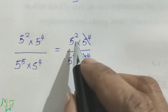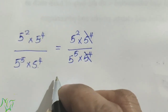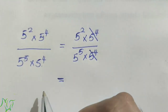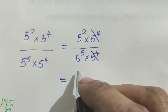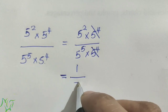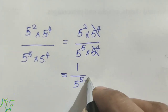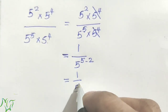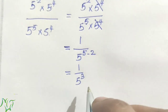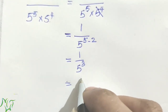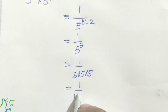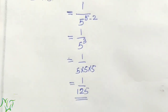5 squared by 5 raised to 5 — here we use the division rule. The power in the denominator is bigger, so we use the second rule: 1 by 5 raised to 5 minus 2, which is 1 by 5 raised to 3. To find the value, we expand: 1 by 5 into 5 into 5, multiplied 3 times, equals 1 by 125.